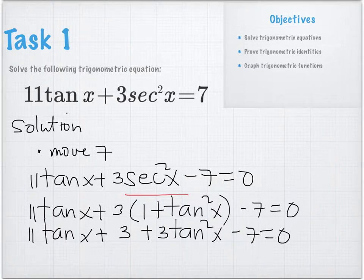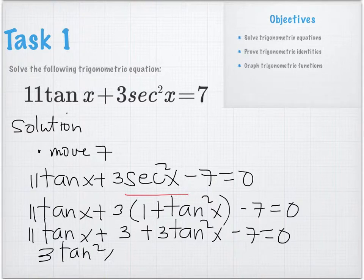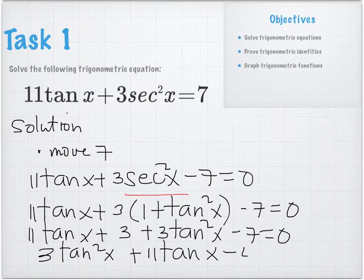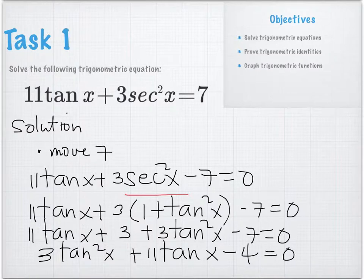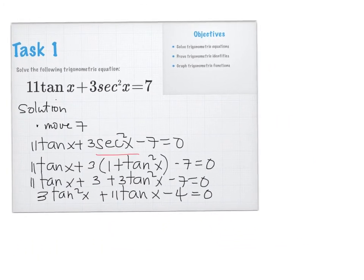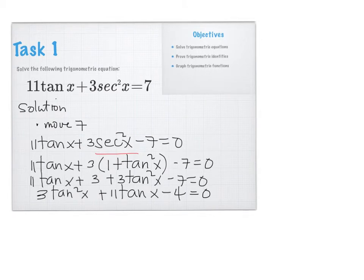Combining like terms: negative 7 plus 3 gives us 3 tangent squared X plus 11 tangent X minus 4 equals 0. We rearrange it to standard form: 3 tangent squared X plus 11 tangent X minus 4 equals 0.